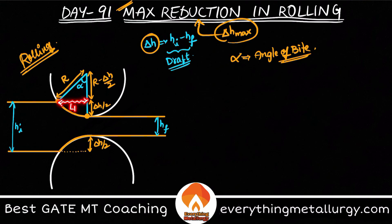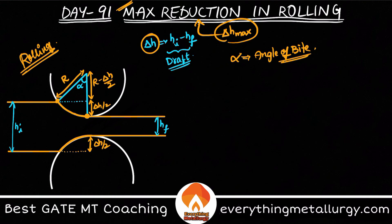This length here is called LP — length of contact. Now, if you take tan alpha, it is LP divided by r minus delta h by 2.